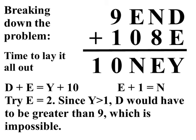Try E equals 2. Since Y is greater than 1, D would have to be greater than 9 for this to be carried over. We can't have a digit greater than 9, so this is impossible. E cannot equal 2.